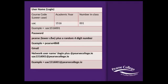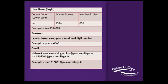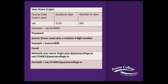You will also be allocated an individual password. Please keep this password private — do not share this password with anybody else in the class. The password is made up of PEARS plus a random four-digit number. It is a random number so that other people in your class cannot guess it. So for example, this particular user will have the password PEARS4868.